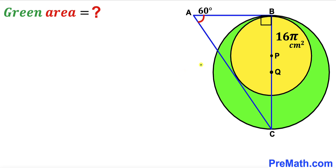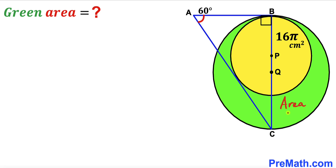Welcome to pre-math. In this video we have got two circles along with a right triangle ABC put together, such that P is the center of the small yellow circle and Q is the center of the larger circle. Both centers are collinear. The area of the yellow circle is 16π cm², angle BAC is 60 degrees, and our task is to calculate the area of the green shaded region.